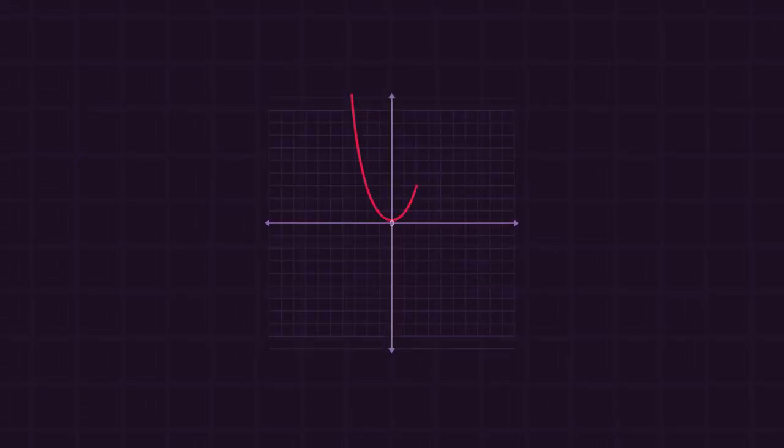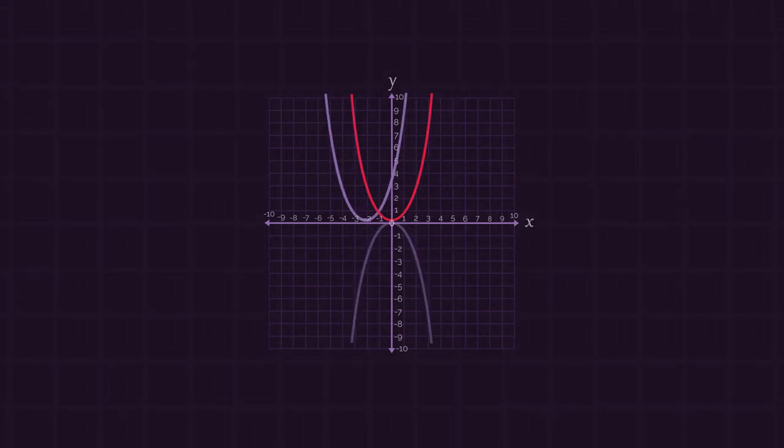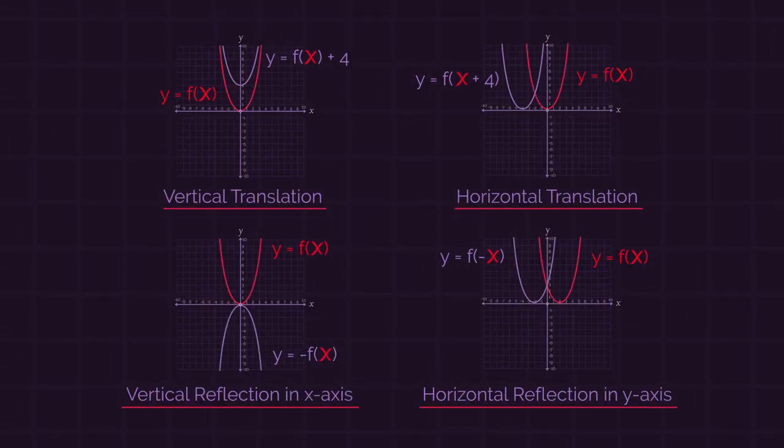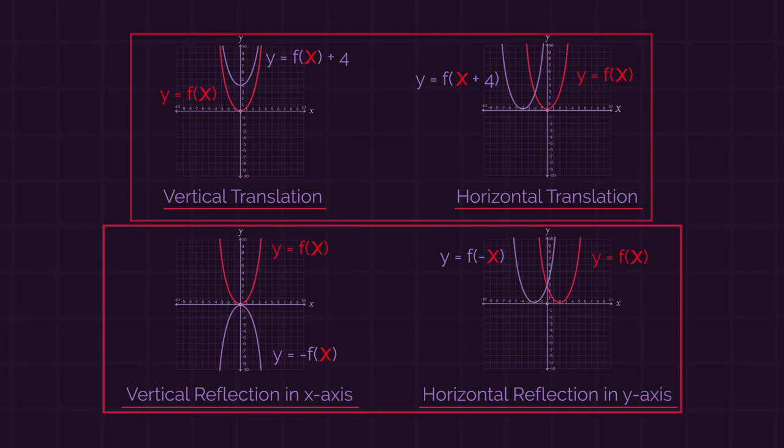Functions of graphs can be shifted and reflected. This is really useful for graphic designers and anyone designing 3D images and objects. Here are four transformations that we need to learn: two translations and two reflections.